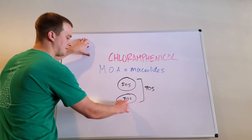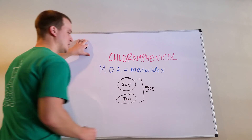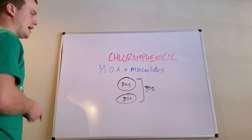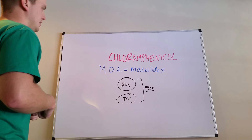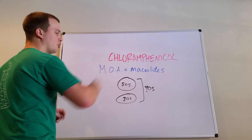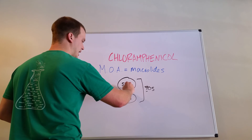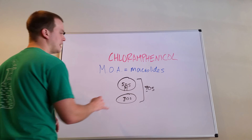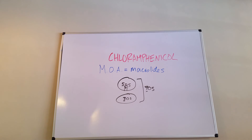Remember that prokaryotes have all odd numbers. Ribosomes are important for translation — they get that RNA and translate it into a new protein. The way that macrolides or chloramphenicol work is they bind to that P-site and they prevent that peptide chain from growing anymore. Thus, they're bacteriostatic. They do not allow prokaryotic protein synthesis to occur, and because of that, our bodies can do the trick and get rid of that infection.